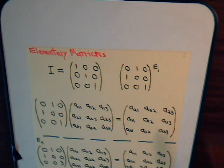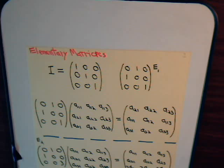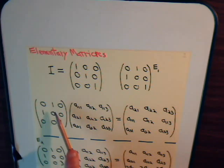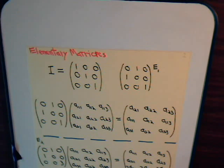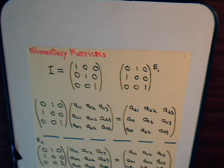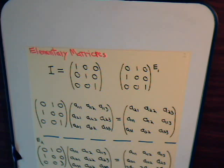Continuing the multiplication, we get A22 for the second column and A23 for the third position. What we end up with is our original matrix except the first and second rows are exchanged. The second row is now in the position of the first row. So an elementary matrix of type 1, obtained by interchanging rows of the identity matrix, produces that same row exchange when any matrix is multiplied by it.